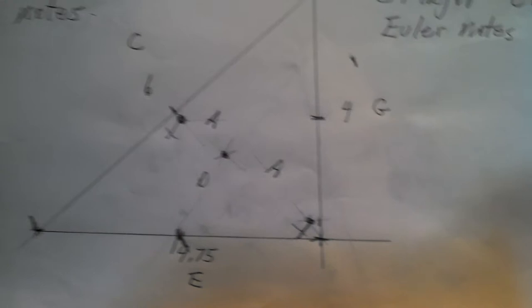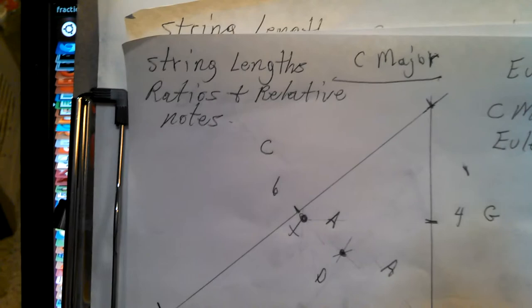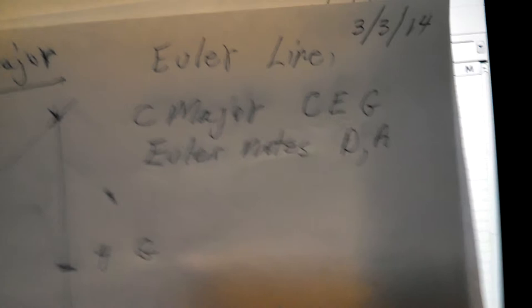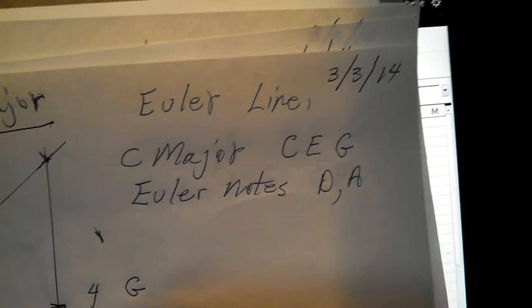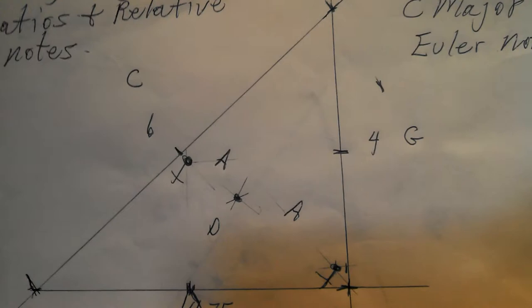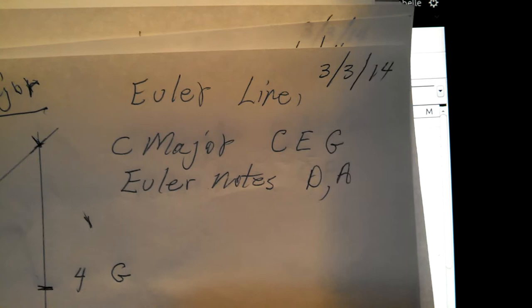This is string length ratios and relative ratios. For the C major, the three notes are C, E, G, and the Euler notes that end up being created by the Euler line. Euler was a Swiss mathematician from the 1700s and he found that this was the case, always in a straight line and half the distance between two dots as it is between the other two. These are the Euler notes that I came up with: D and A. That ends up being the second and the sixth in that C major key.